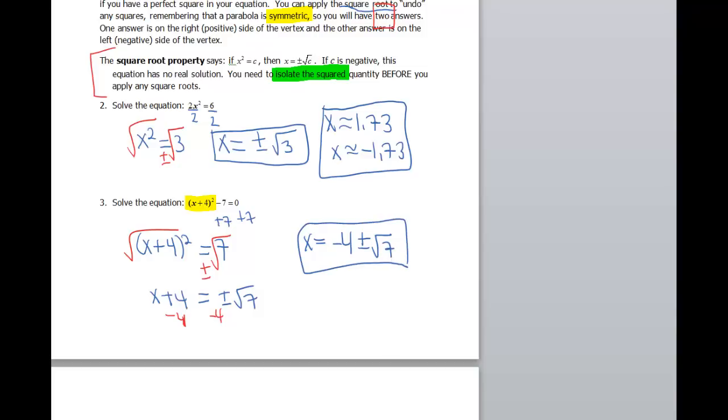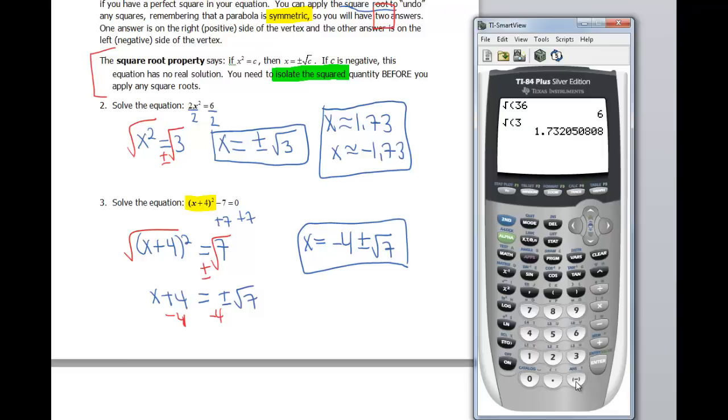Or let's go back to the calculator to get an approximation. So negative 4 plus the square root of 7, so second square root 7, hit enter. And then we can also do negative 4 minus the square root of 7.